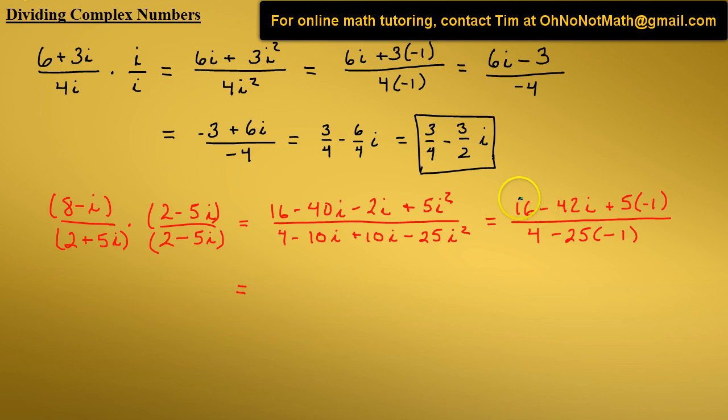Let's continue to simplify. We have 16 plus negative 5, which is 11. Minus 42i. In the denominator, we have 4 minus 25 times negative 1, that's going to be 29.